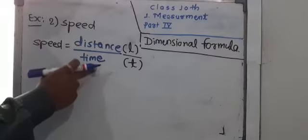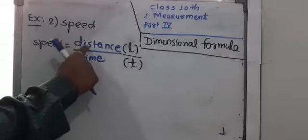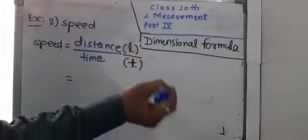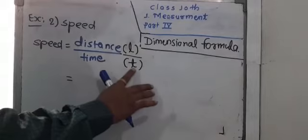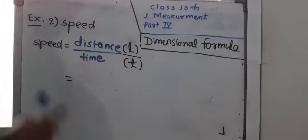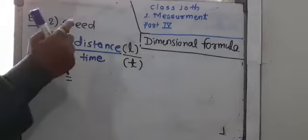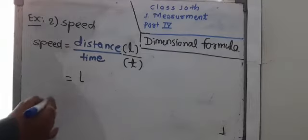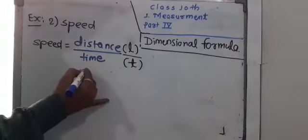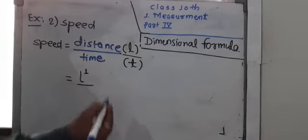The formula for speed is distance upon time. Distance itself is length; it is a fundamental quantity. Time is also a fundamental quantity. So speed depends on length one time. Therefore, I can mention L raised to 1 divided by T raised to 1.